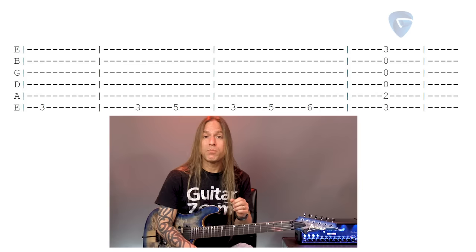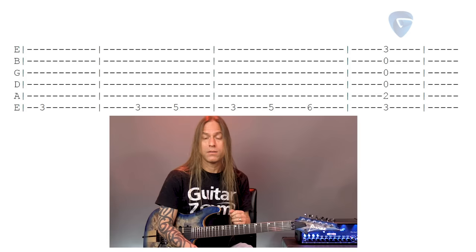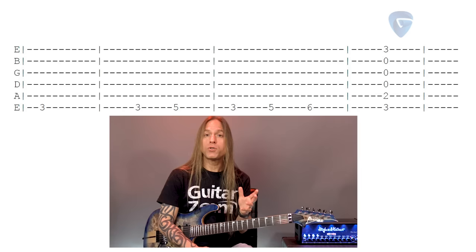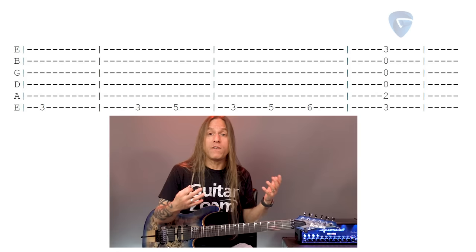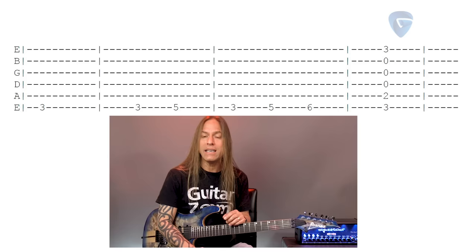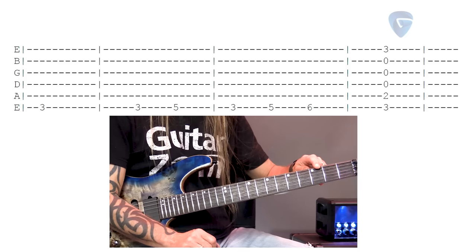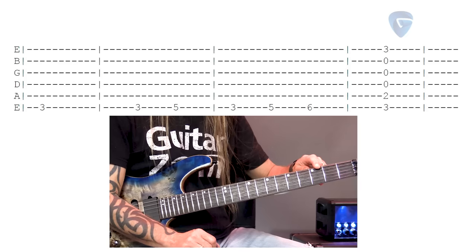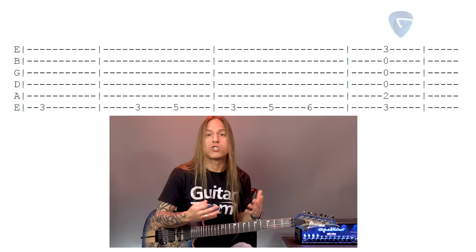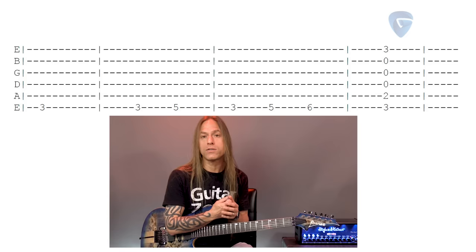Now the next thing we're going to do is look at that first measure. In that first measure I just put a 3 in there. What that 3 is telling you is you're going to play the 3rd fret on the 6th string. That's it. This particular tab is not showing you quarter notes, 8th notes, or which fingers to use — I did that on purpose to show you the bare essentials. So all you're seeing is a 3, meaning 3rd fret of the 6th string.